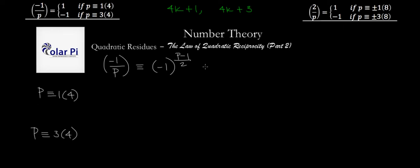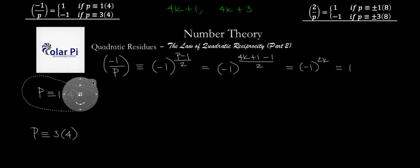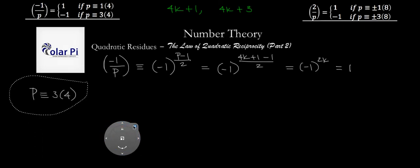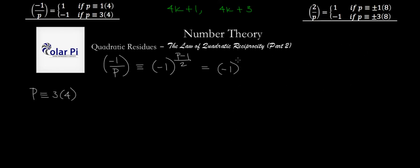So let's first assume that P is of the form 4k+1. Then (-1)^((P-1)/2) would read (-1)^((4k+1-1)/2), which is the same as (-1)^(2k). We know that 2k is even, so we have negative 1 to an even power, which is positive 1, meaning (-1/P) equals 1 only if P is congruent to 1 mod 4.